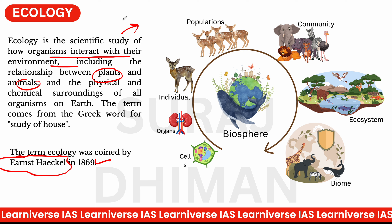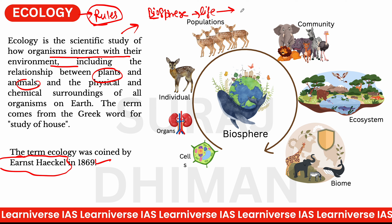किसी भी environment को समझने के लिए science की जरूरत है जो rules बनाए। इसमें biosphere की बात आती है। Bio means life। Life तीन components के मिलने से आती है — पहला है lithosphere, यानि lith का मतलब पत्थर — पूरी land का part। ये 30% earth है।